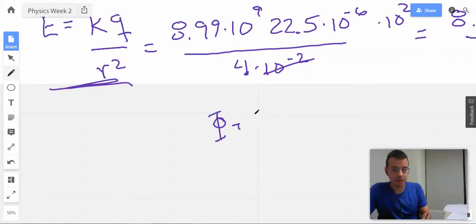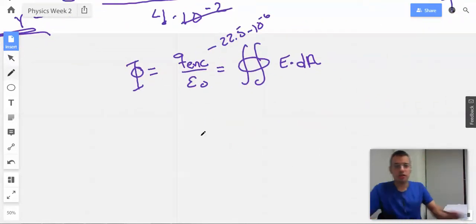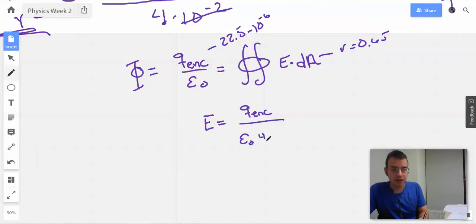So we have flux equals q enclosed over epsilon naught, equals a surface integral of e dot dA, where q enclosed is going to be 22.5 times 10 to the negative 6th. So rearranging this, we're going to have e equals, so we're going to be able to pull the e out because it's constant, and we'll have surface integral of the sphere with radius equals 0.65, which I'll call 6.5 times 10 to the negative 1st. So we'll have q enclosed over epsilon naught, 4 pi r squared.